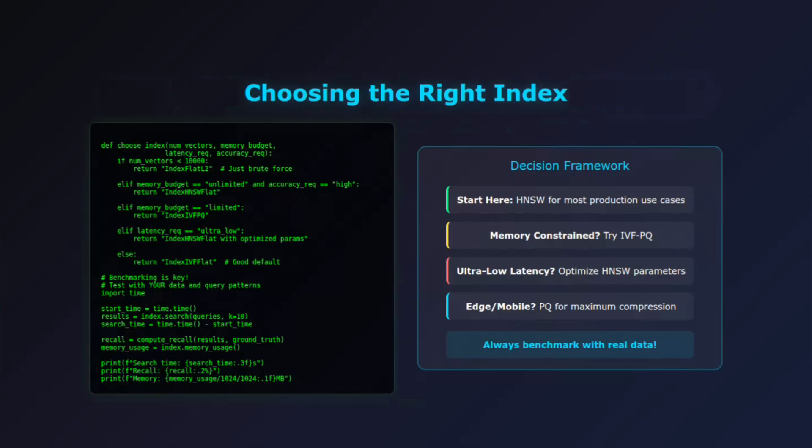So how do you choose? Start with these questions: How many vectors do you have? What's your memory budget? Do you need sub-millisecond response times? Can you tolerate some accuracy loss? My recommendation: start with HNSW for most use cases. If memory becomes an issue, try IVFPQ. Always benchmark with your actual data and query patterns — the best index depends entirely on your specific speed, memory, and accuracy requirements.